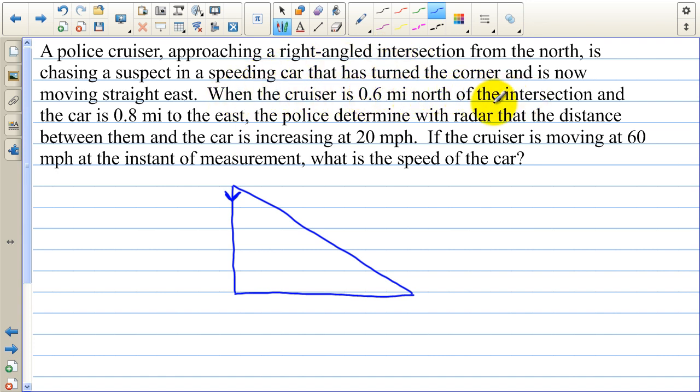When the cruiser is 0.6 miles north of the intersection, let's call this the cruiser, let's call this the suspect. Since we're going to use the hypotenuse in this one, maybe we should write a P for police. When the cruiser is 0.6 miles north of the intersection, we know that P equals 0.6. And the car is 0.8 miles to the east. The police determined with radar that the distance between them and the car is increasing at 20 miles per hour. So if we call this the hypotenuse side C, then DC DT equals 20 miles per hour.